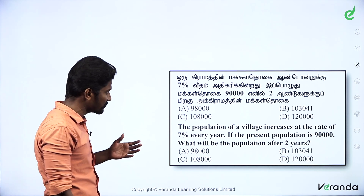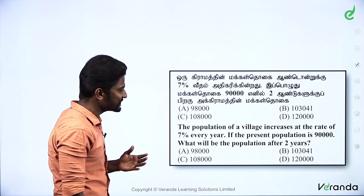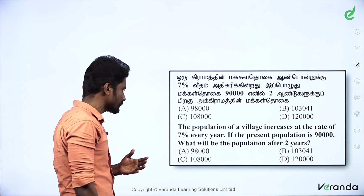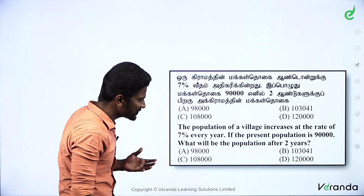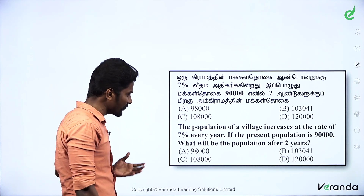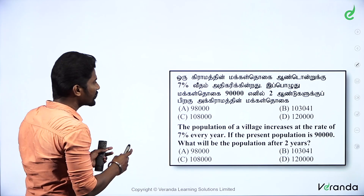The population of a village increases at the rate of 7% every year. If the present population is 90,000, what will be the population after 2 years?